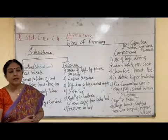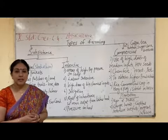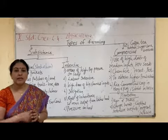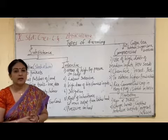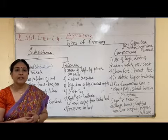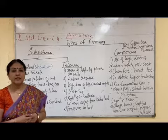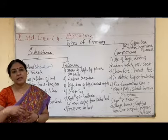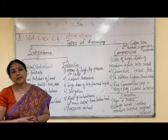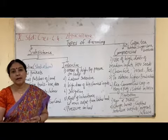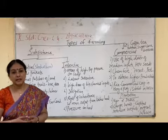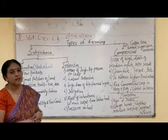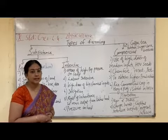Slash and burn agriculture is practiced especially in the north-eastern parts of India, where it is called 'jhoomi.' It is called by different names in different parts of India, and even in other countries — for example, it is called 'milpa' in Mexico. This is all about primitive subsistence farming, which is also known as slash and burn agriculture.